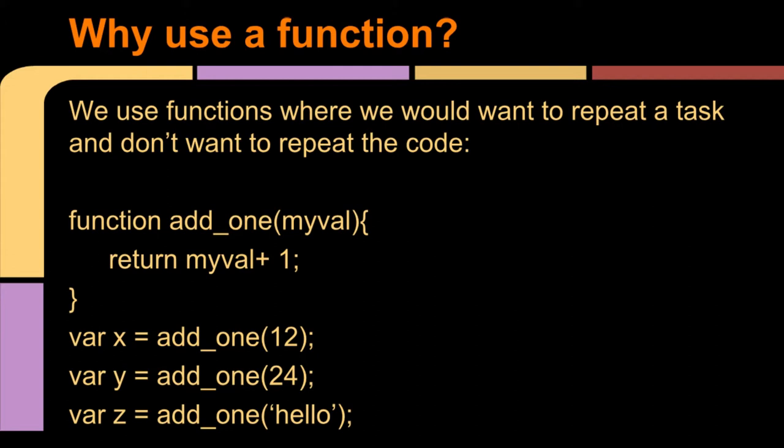And in the last example, var z is equal to add1 to a string of hello. Now, instinctively, you might think this is wrong and will somehow crash. But in fact, it doesn't. What it does is turns the one inside the function into a string and sticks it on the end. And we will print out hello1. So let's see an example of this.